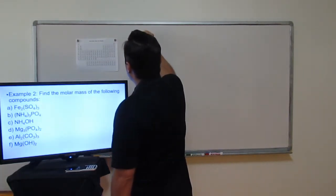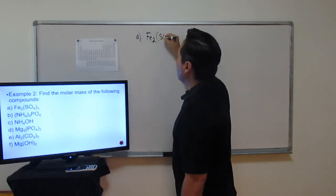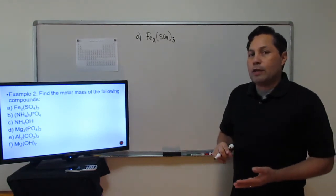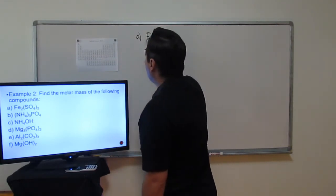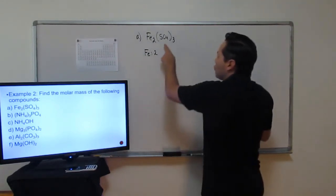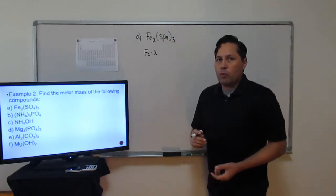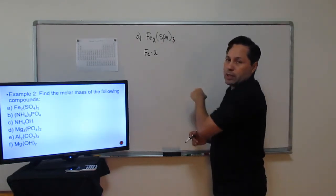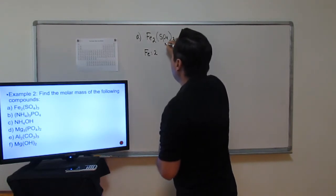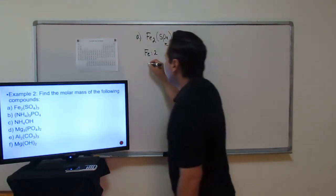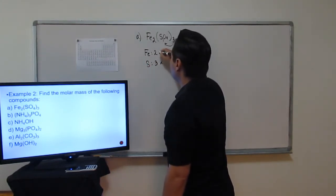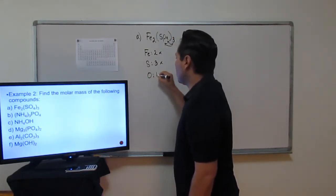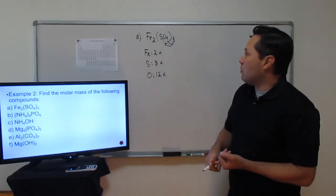Let's begin with letter A: iron 3 sulfate, Fe₂(SO₄)₃. Again, you begin by counting how many of each atom you have. For iron, you have two. For sulfur, there's no number next to it so you put one — but because sulfur is inside the parentheses with a 3 outside, you multiply: 3 times 1 gives three sulfurs. For oxygen: 3 times 4 gives twelve oxygens. That's how you handle parentheses — multiply the subscript by the number outside.